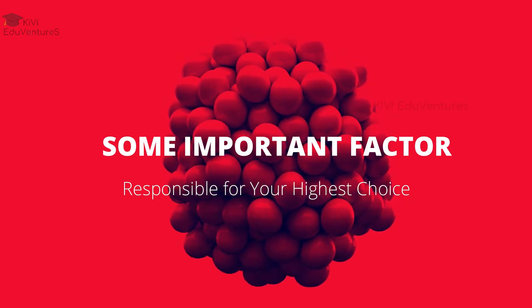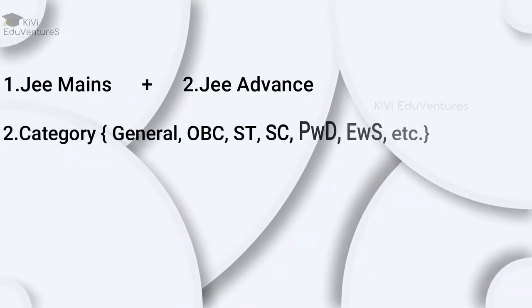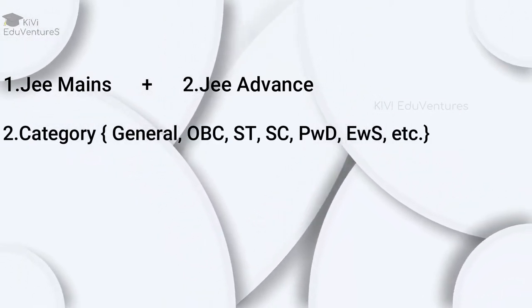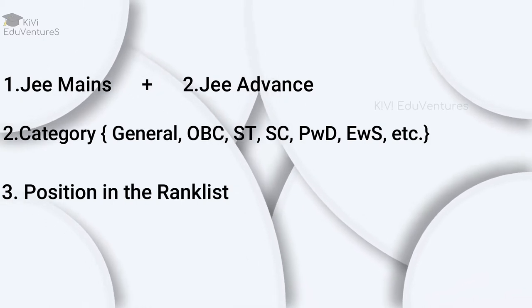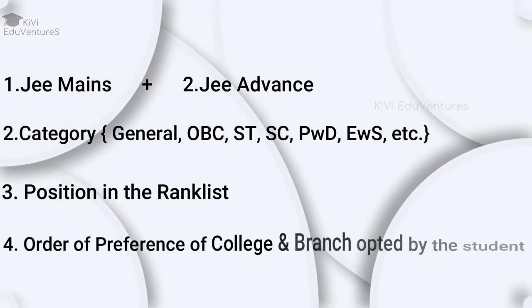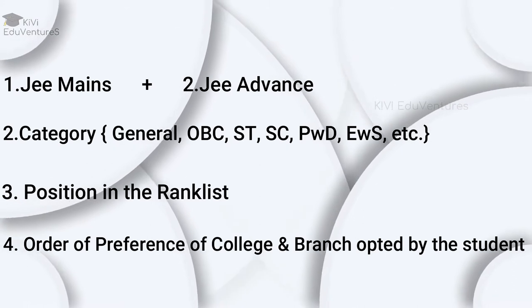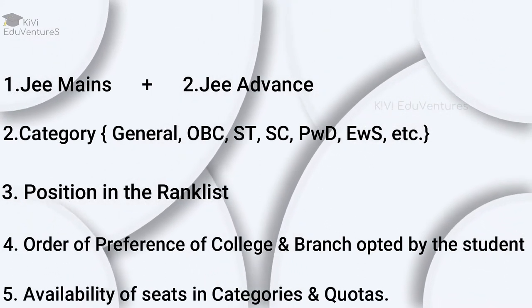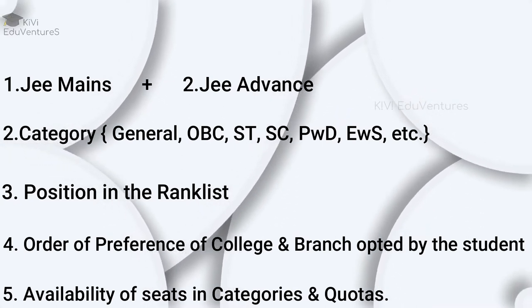First, the candidate should have appeared in JEE Main and JEE Advanced. Second, the category of the candidate. Third, the position of the candidate in the rank list. Fourth, the order of preference of academic programs by the candidate. Fifth, the availability of seats in different seat categories or seat quotas for which the candidate is eligible.